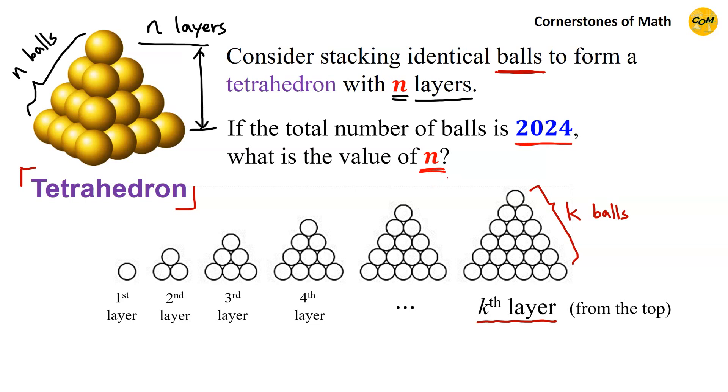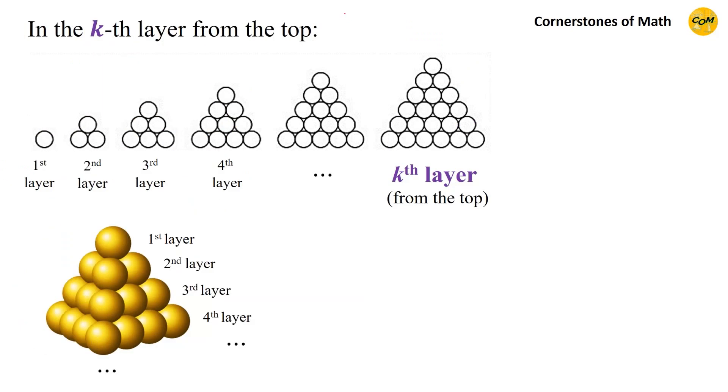Alright, in order to solve this, we must find a general expression for the number of balls in a tetrahedron. And in order to do that, we must first obtain the expression for the total number of balls in one layer of the tetrahedron.